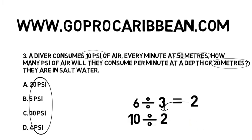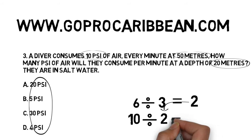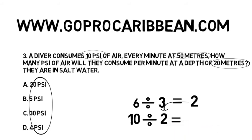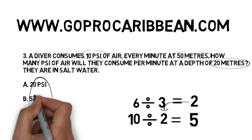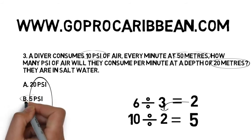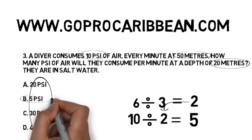10 divided by 2 gives me the correct answer. The correct answer is B — 5 PSI. So in this example, we actually found an example where the correct thing to do was to divide in the second calculation.